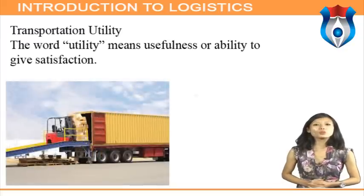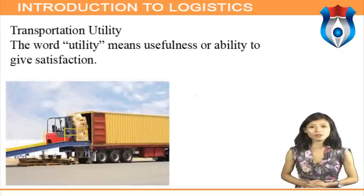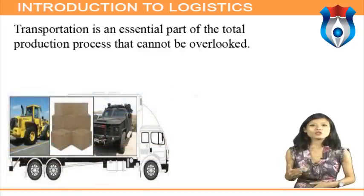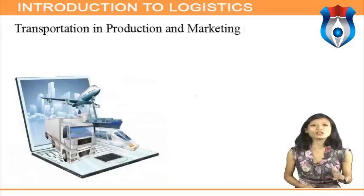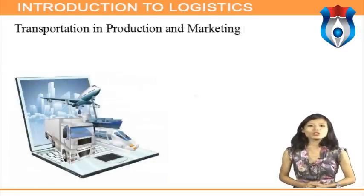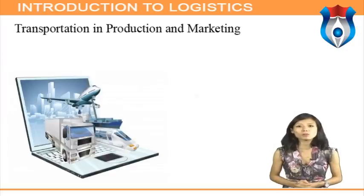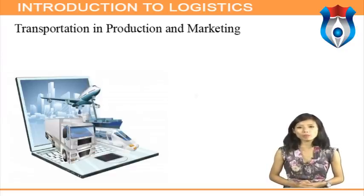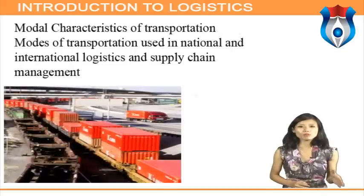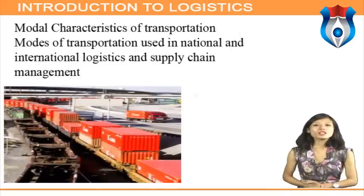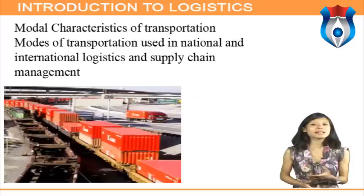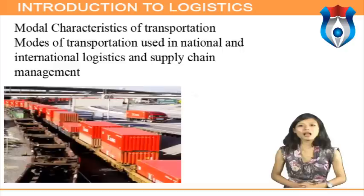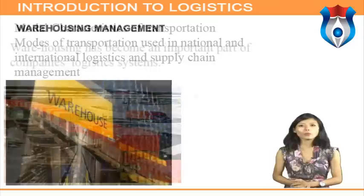Transportation utility — the word 'utility' means usefulness or ability to give satisfaction. Place utility exists when goods are in a place where they can be consumed, so transportation is an essential part of the total production process that cannot be overlooked. Modes of transportation used in national and international logistics and supply chain management can be grouped under five modes: rail, highway, water, pipeline, and air.